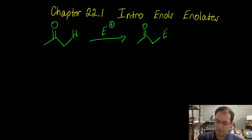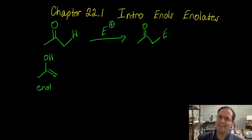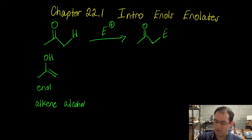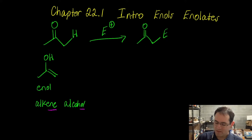One of the intermediates we're going to be talking about is called an enol. An enol has a very specific structure — it looks like an alkene and it looks like an alcohol. This intermediate is extremely important, so we abbreviate it enol, which is short for alkene and alcohol.